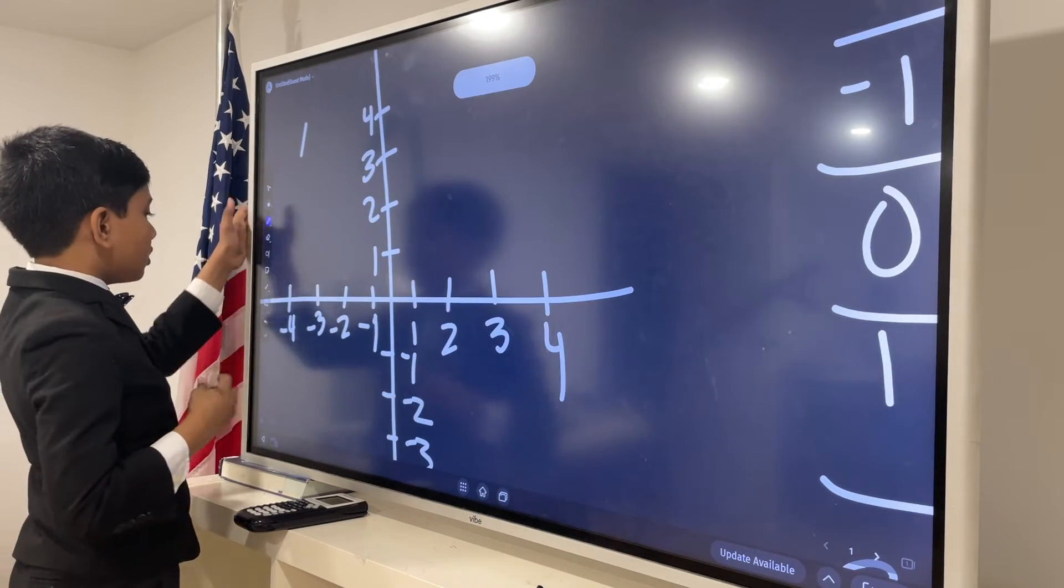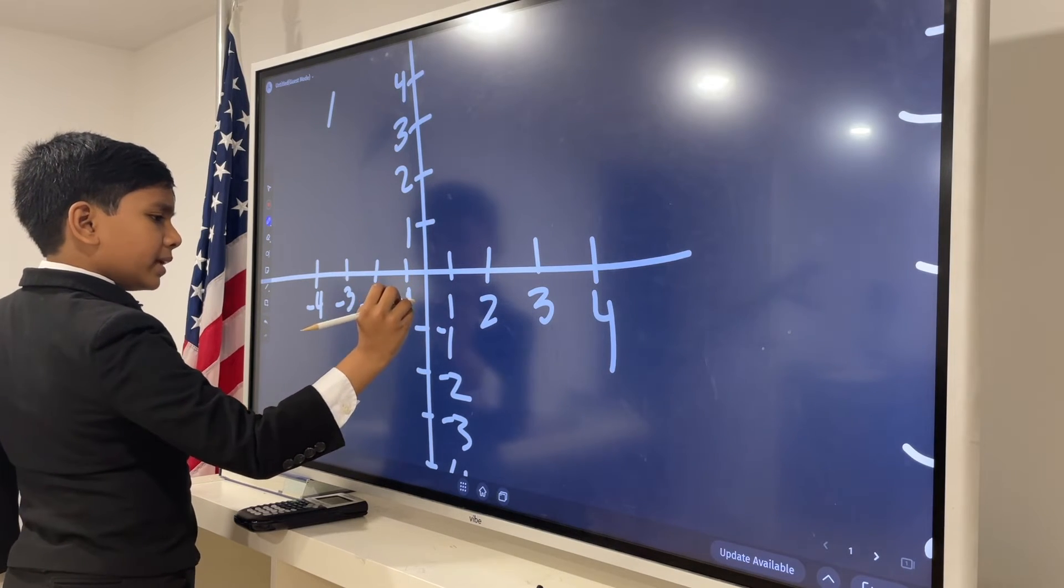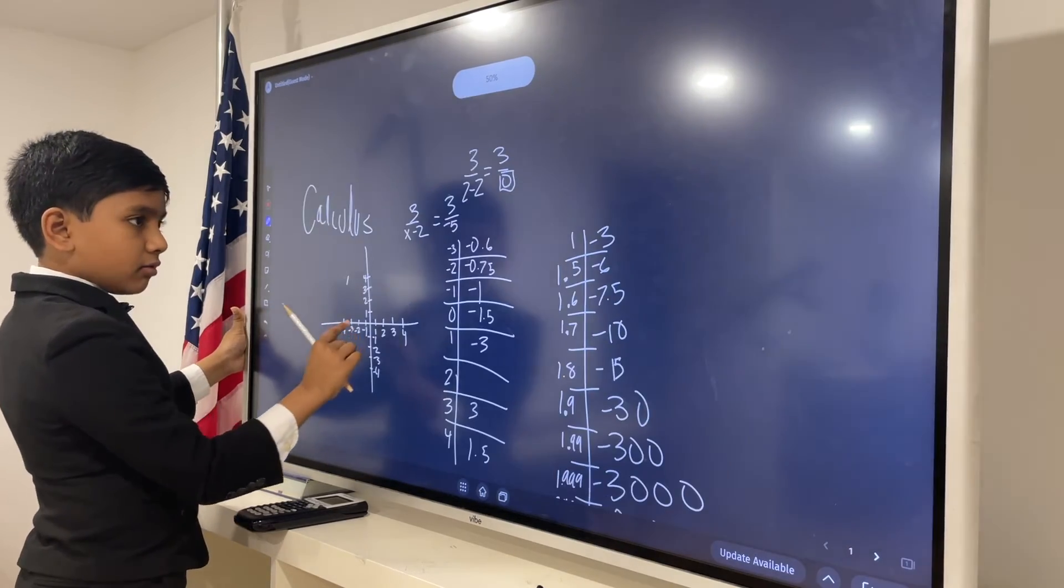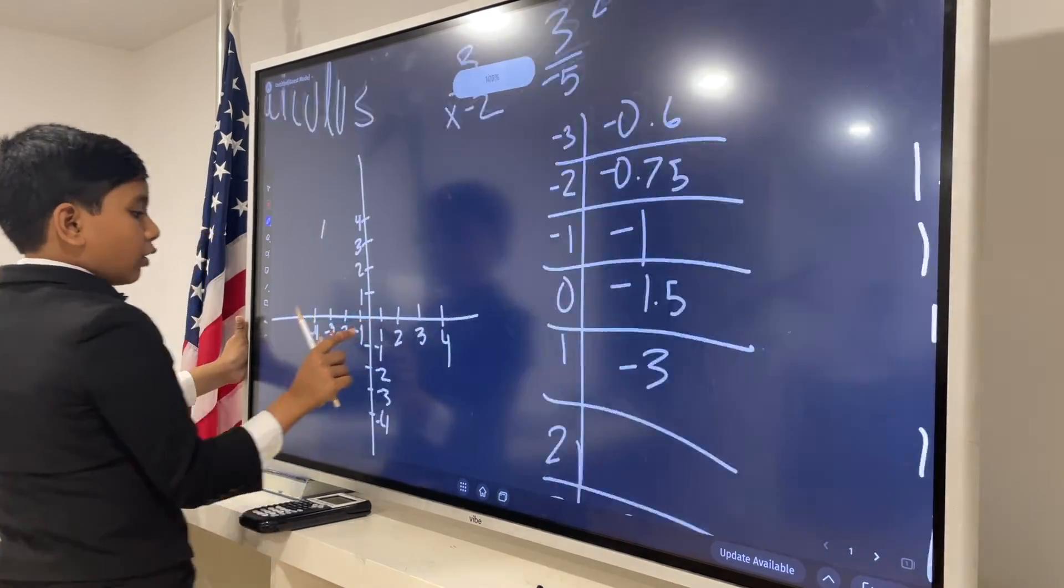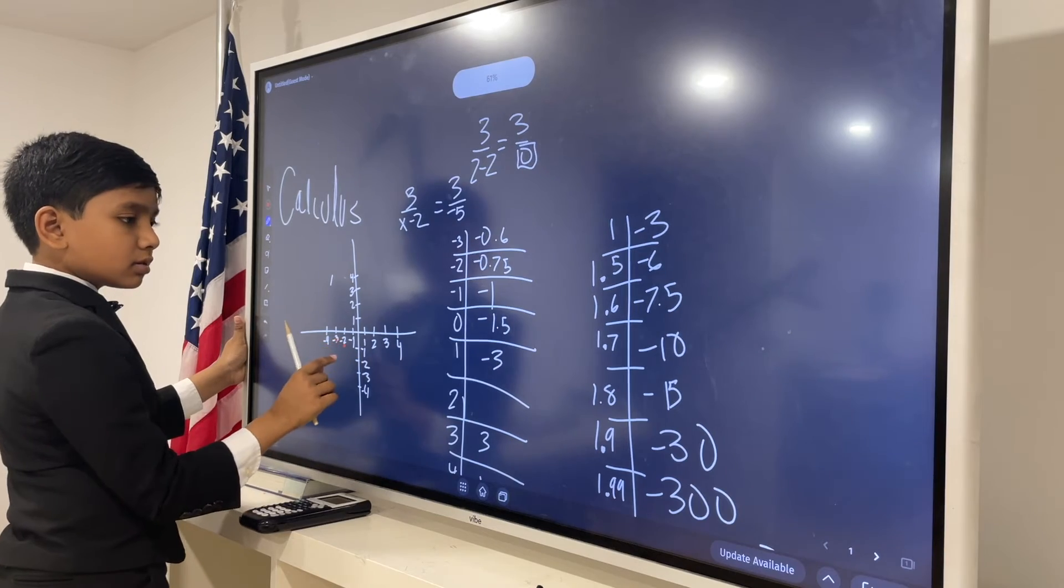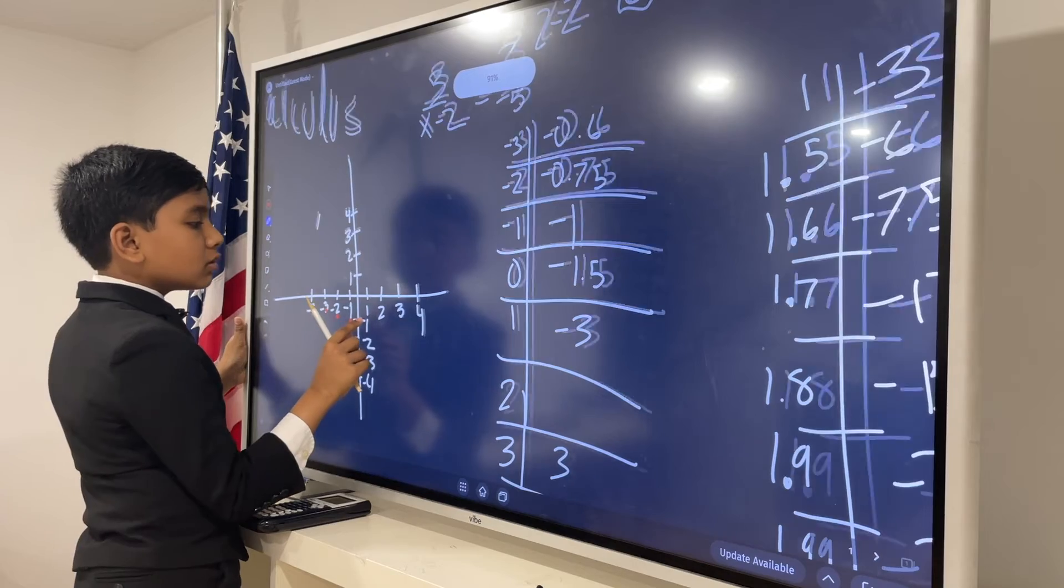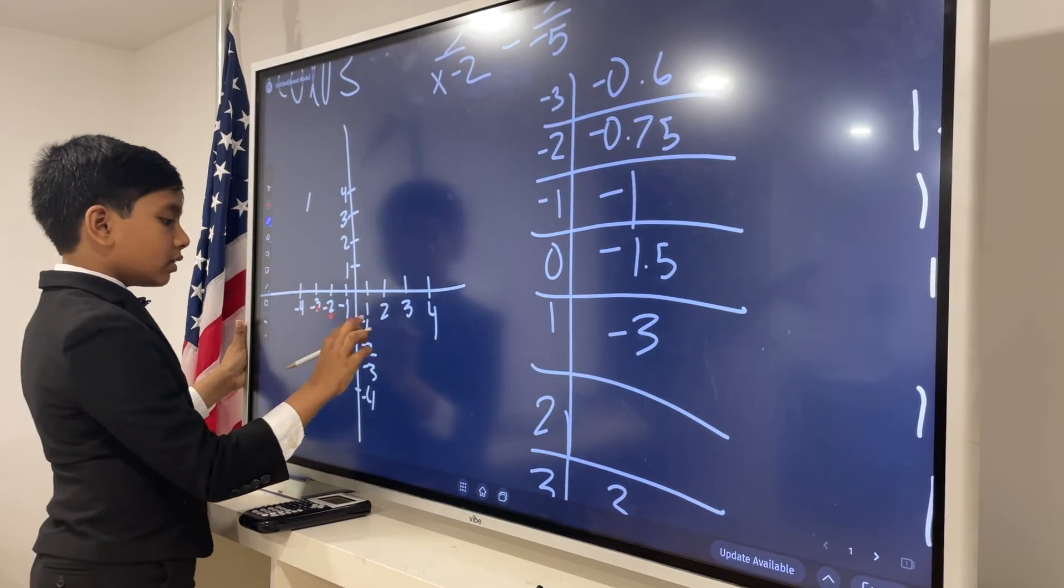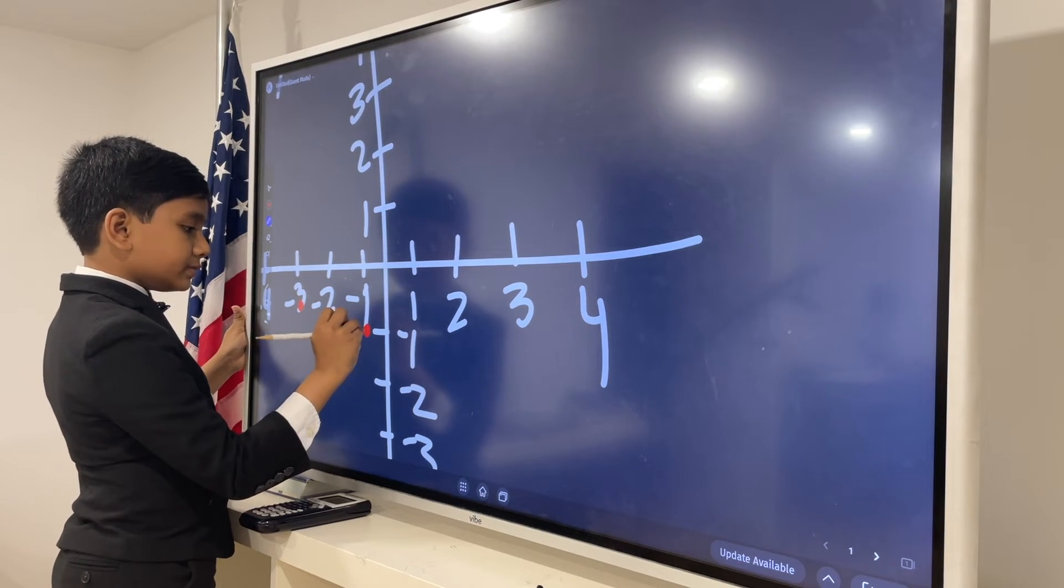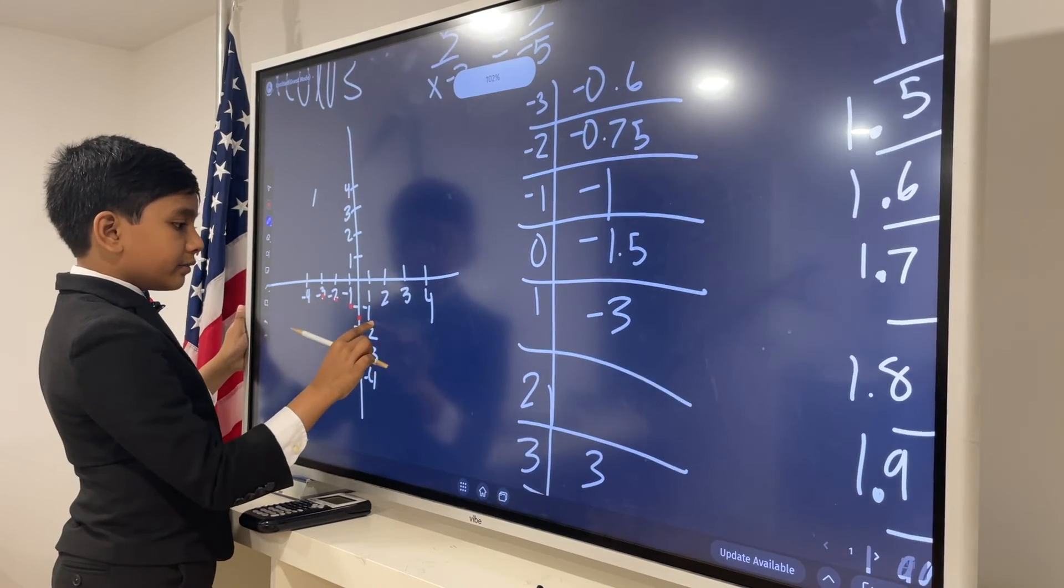So negative 3, negative 0.6. Alright, that's fine. So that would be about here. What about negative 2? Negative 0.75. Okay, so that would be a bit farther down. Negative 1 would be just negative 1. 0 would be negative 1.5. 1 is negative 3.